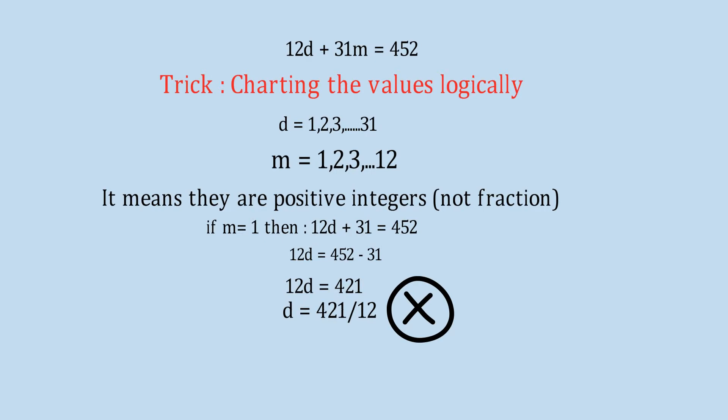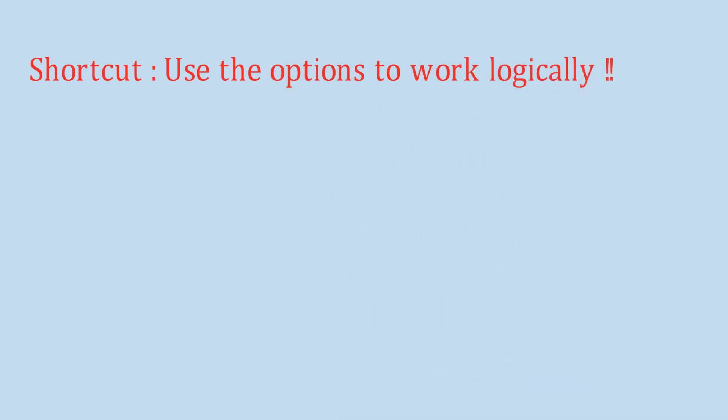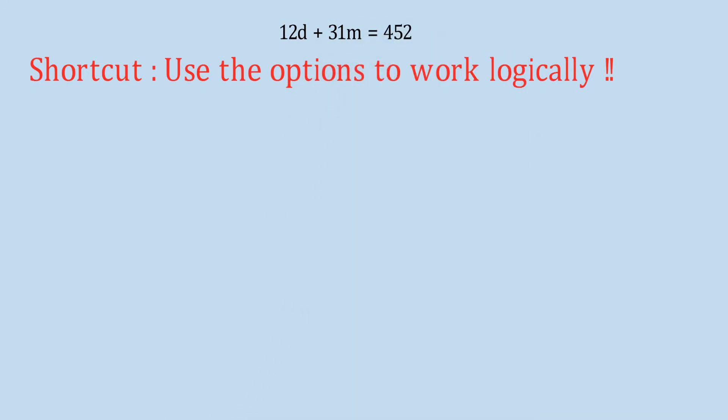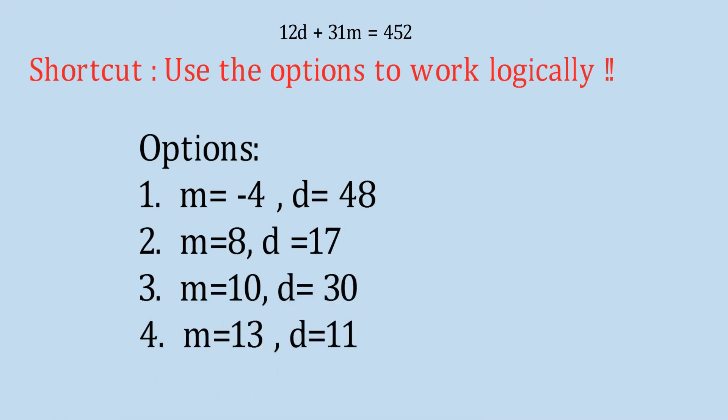Similarly, we have to apply values of all M and D one by one, but this will make it very lengthy. So we need to devise a shortcut: use the options to work logically. In a competitive exam you will get options. The options are: first, M equals minus 4 and D equals 48; second, M equals 8 and D equals 17; third, M equals 10 and D equals 30; and fourth, M equals 13 and D equals 11.